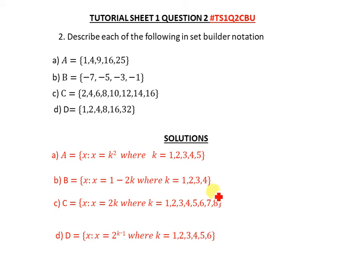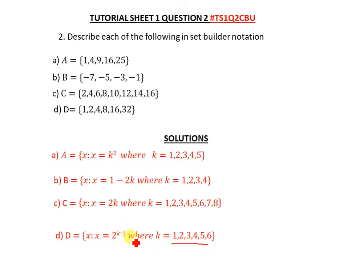You may not have learned APs and GPs yet, but when you do it will be easier. For now, use logic and inspection — look at which formula fits. The solution is: x is such that x = 2^(k−1), where k = {1, 2, 3, 4, 5, 6}. Try substituting those values of k and you'll get the set as your answer.